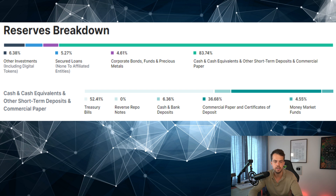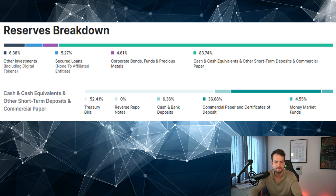The uncertainty around USDT stems from the question of whether Tether holds enough capital for every USDT in circulation. According to the Tether website, reserves are broken down as shown on screen. Commercial paper and certificates of deposit — about 30% of total reserves — are the main area of uncertainty, as the specific holdings are not disclosed publicly. However, this means a massive amount of USDT would have to be redeemed before Tether even has to touch this portion. The company could simply be more transparent about its exact holdings.